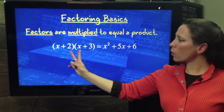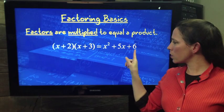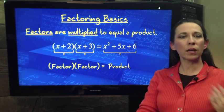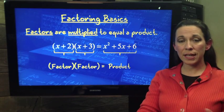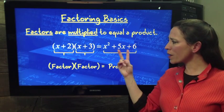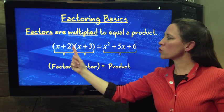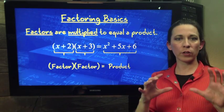Likewise, if you have two binomials being multiplied to give you this trinomial here, we still have a factor times a factor equaling a product. So a factor can take different forms. So basically, when you're asked to factor a trinomial like this, you're asked to put it into the two binomial factor forms.